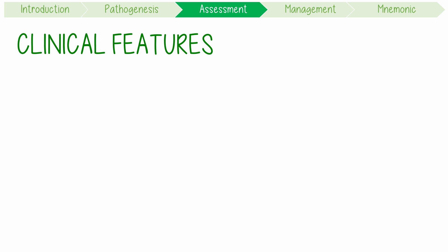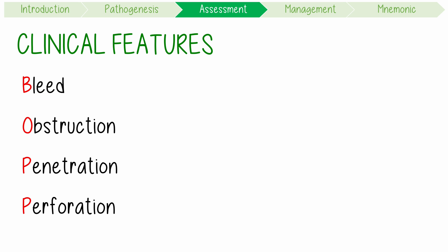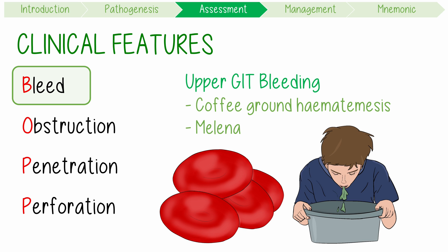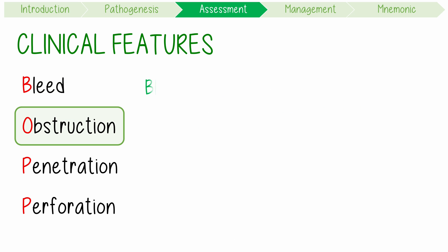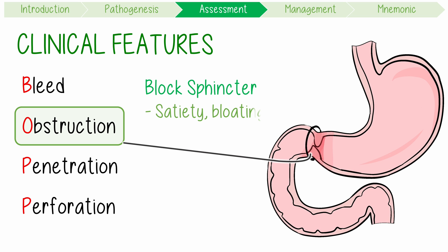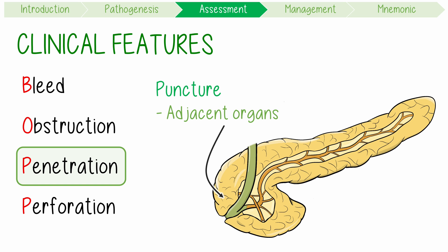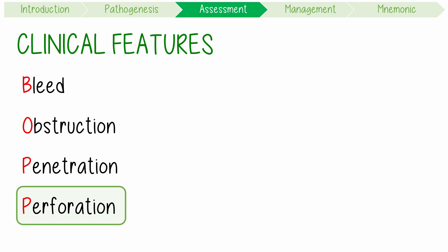Complications can be remembered using the mnemonic BOP: Bleeds, Obstruction, Penetration, and Perforation. Upper GI bleeding may present with coffee ground haematemesis and melena. Obstruction: ulcers can block the pyloric sphincter, causing satiety, bloating, and pain. Penetration: lesions can puncture into adjacent organs like the pancreas without perforation into the peritoneal cavity. Perforation will present with shock and peritonitis.